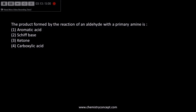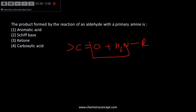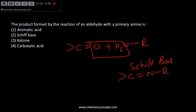The next question is about the product formed by the reaction of an aldehyde with a primary amine. The aldehyde reacts with the primary amine, water is removed, and what we get is C=NR, which is called a Schiff base.